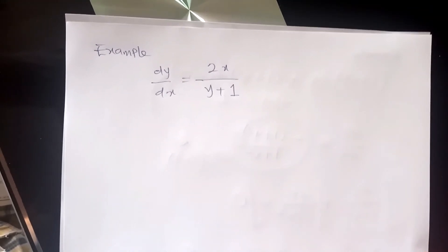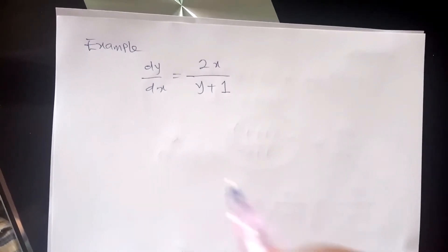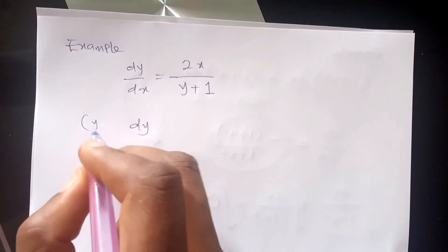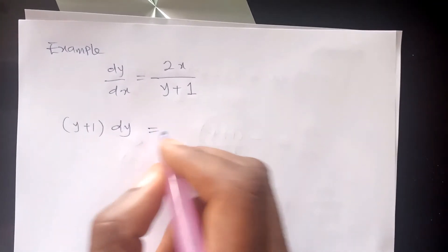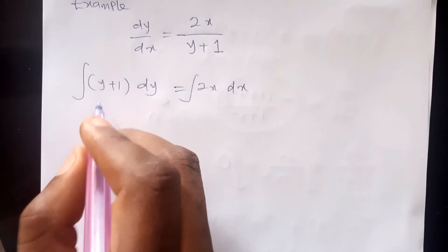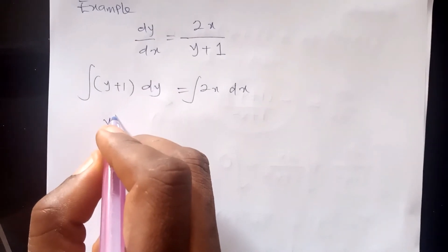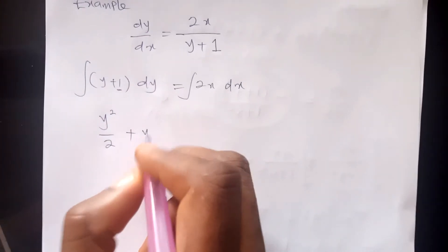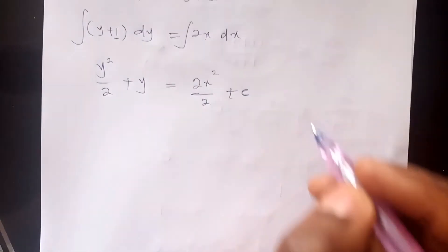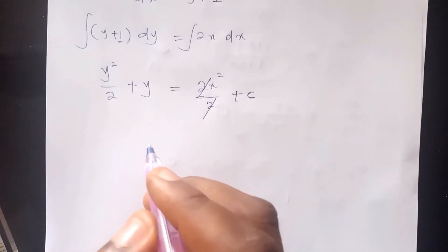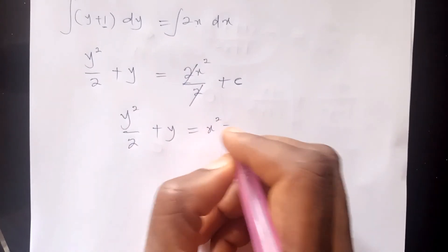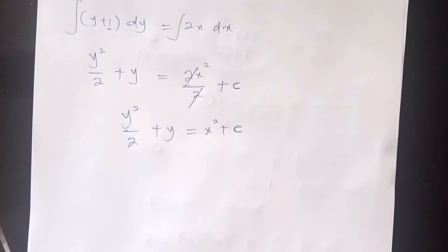Let's consider this example again. We can easily separate the variables: (y + 1) dy = 2x dx. Integrating both sides: the left side gives y²/2 + y, and the right side gives 2x²/2 = x², plus a constant of integration. The twos cancel, so we have y²/2 + y = x² + C. That is the solution we are looking for.